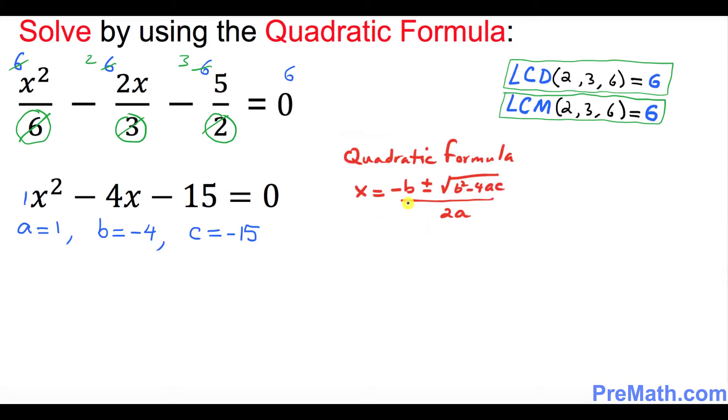And here is the quadratic formula that we will be using. And here are our coefficients: a equals to 1, b equals to negative 4, and c equals to negative 15. Let's go ahead and plug it into this quadratic formula.